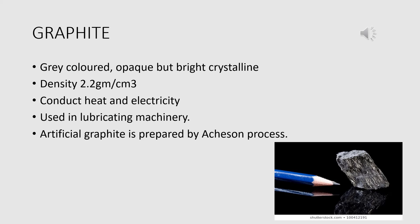Another crystalline allotrope of carbon is graphite. Graphite, known as black lead, is obtained as a mineral in Siberia, Austria, California (USA) and India. Graphite is a grey coloured, opaque but bright crystalline substance.